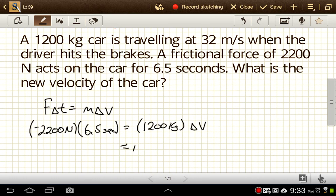So that's going to give us a value for the change in velocity of negative 2200 times 6.5 divided by 1200, which comes out as negative 11.9 meters per second.